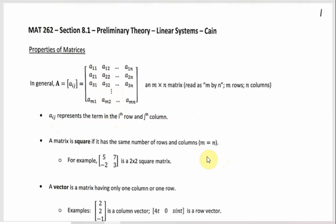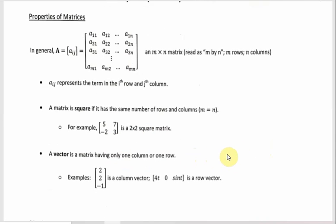A lot of what we're going to have will be square matrices, where a square matrix has the same number of rows and columns — like a 2×2, 3×3, 4×4, and so forth. A vector is a matrix that has only one column or only one row. We'll have these because the original functions like x and y, and their derivatives, will be arranged as vectors. Mostly we'll have column vectors, but row vectors are also possible by definition.